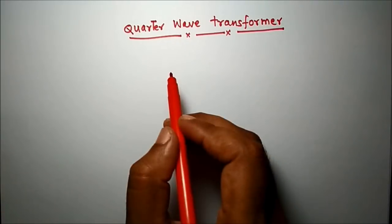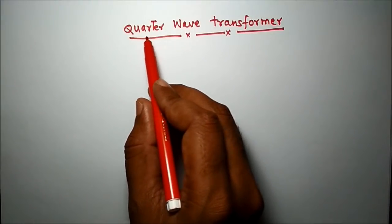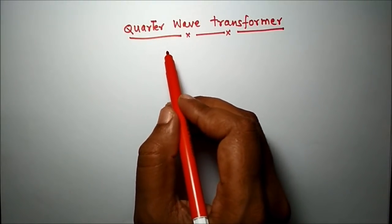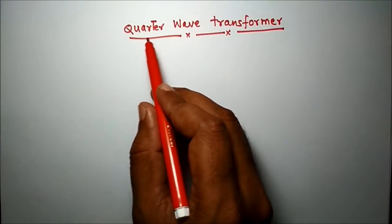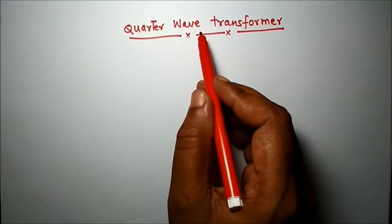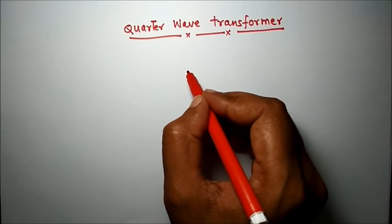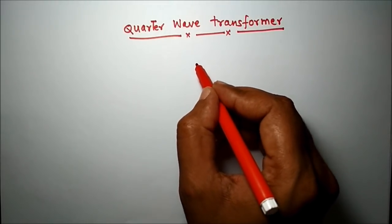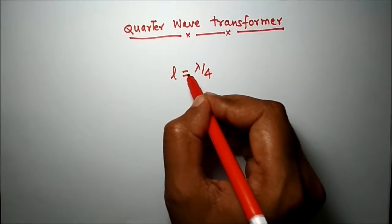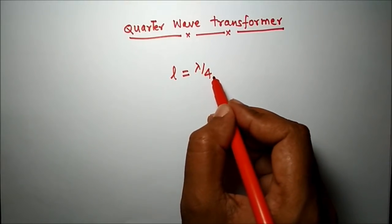So what is a quarter wave transformer? Quarter means lambda — 1 by 4 — and wave means wavelength. So any length equal to lambda by 4 is called a quarter wavelength.